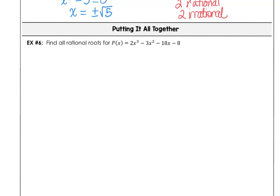Example 6 is a good one to pause the video and try on your own, then come back to check. The p over q list is plus and minus 1, 2, 4, 8, and 1 half.